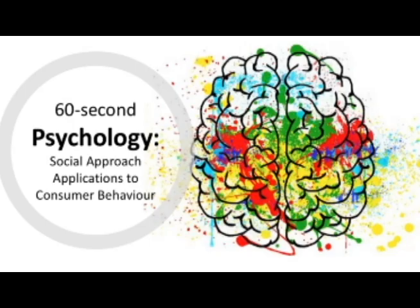Advertisers use social psychology in a number of ways to influence consumer behaviour, including the use of social norms and different types of social influence. One of the main strategies is to position their brand as part of a social norm — the unwritten rules of a society that indicate what is considered normal, accepted or even expected. So if an advertiser makes consumers view their product as part of this social norm, they may be influenced to conform to it by buying their product due to normative social influence.